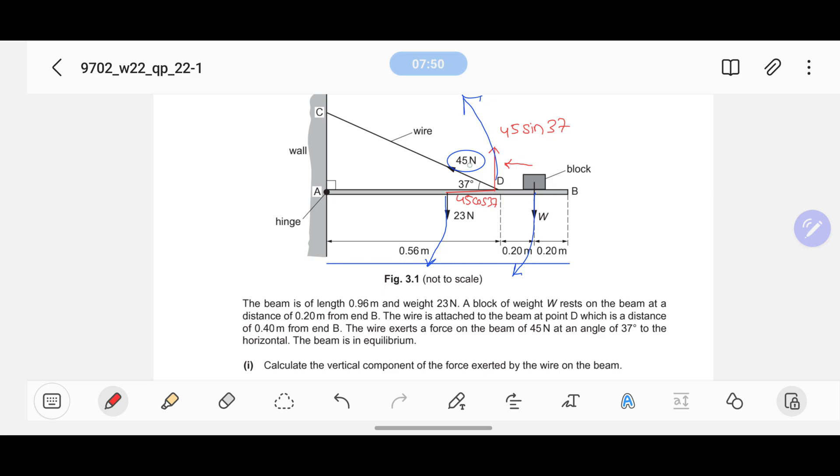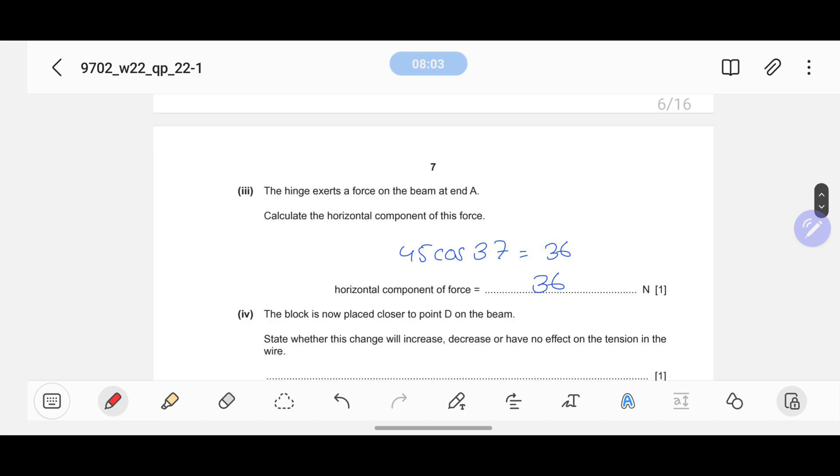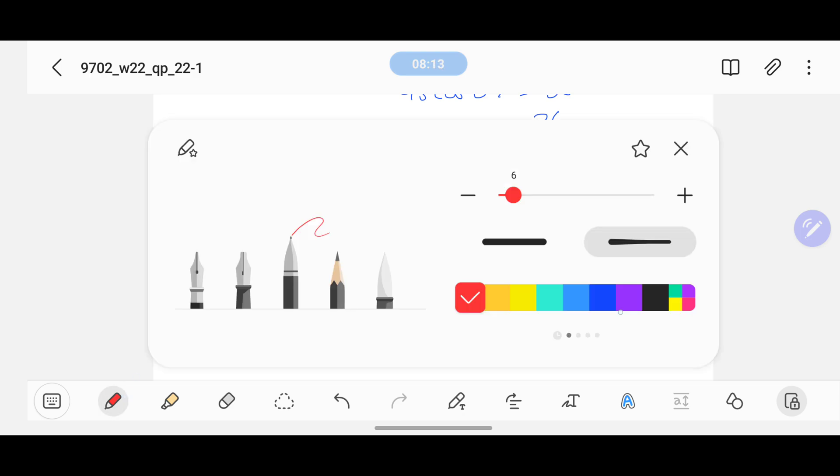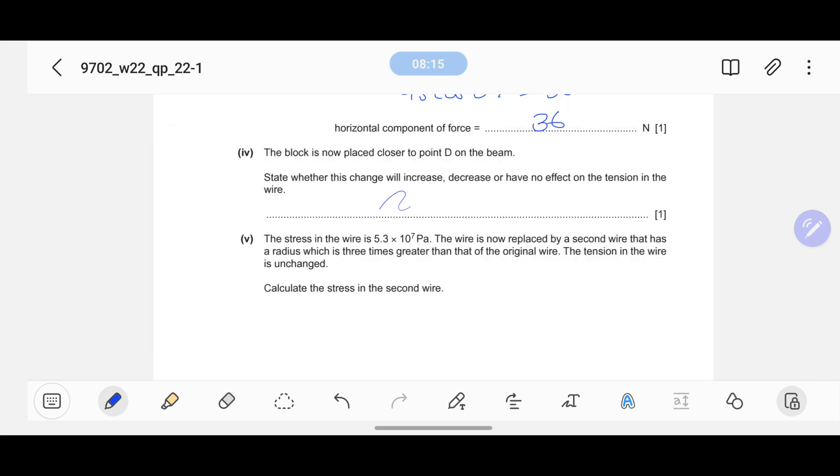If it moves closer towards D, the force that is here will have less tension because the block is coming towards this hinge, or you can say the block is coming near the wire. State whether this change will decrease, increase, or have no effect on the tension in the wire. The tension in the wire will decrease because it is coming nearer.